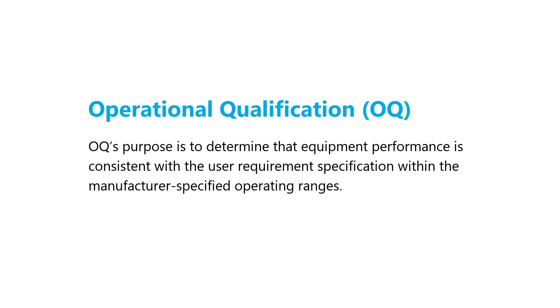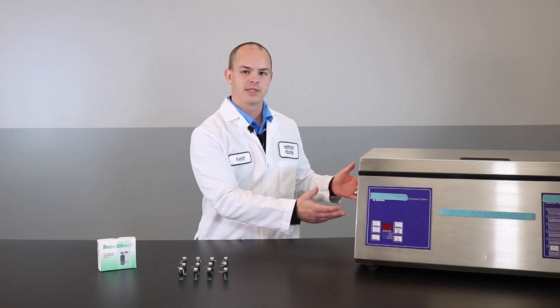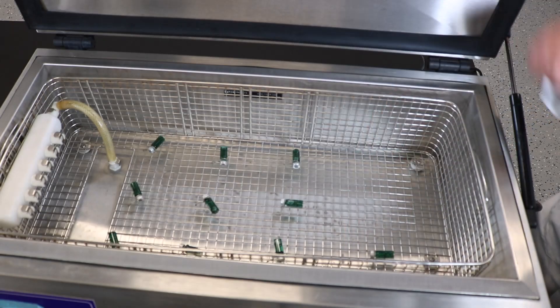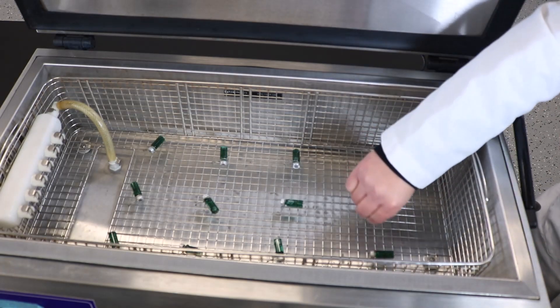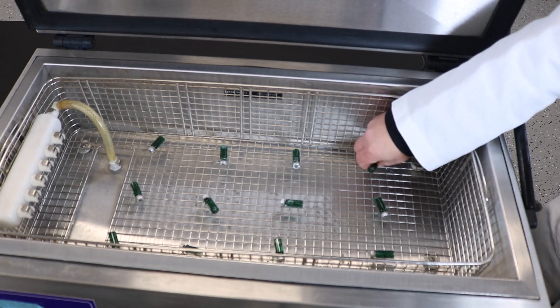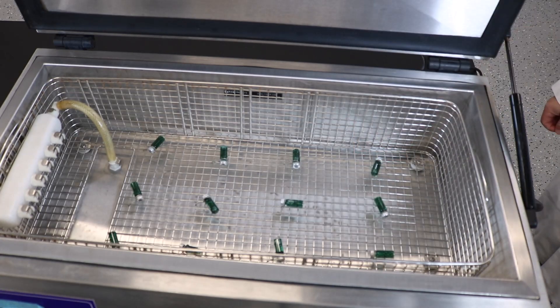And again, we're going to use a lot more SonoChecks. In this example, we have this tabletop one. It's still considered a large tank. We would follow the IFU, as always, but according to the IFU, we would use these 12 SonoChecks and spread them out throughout the bottom of the tank.